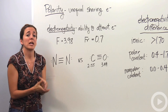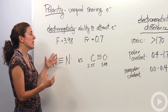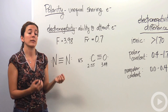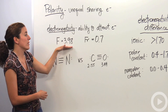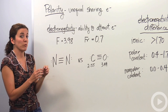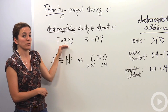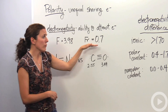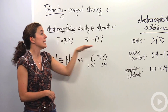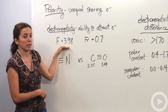Electronegativity is what's playing a major part in this. It's the ability to attract electrons. The trend of electronegativity is that fluorine is the most electronegative atom on the periodic table, with an electronegativity value of 3.98. These aren't actual values — that's why there's no unit. They are in comparison with fluorine. Francium has an electronegativity value of 0.7, significantly less. Francium is the least electronegative atom; fluorine is the most electronegative atom.